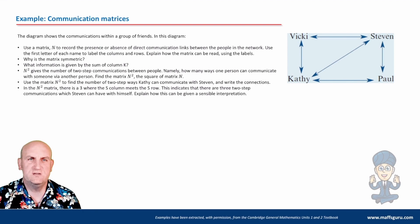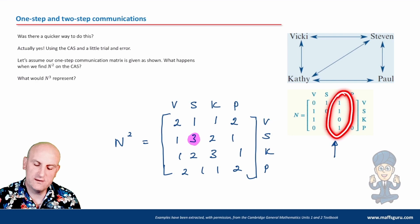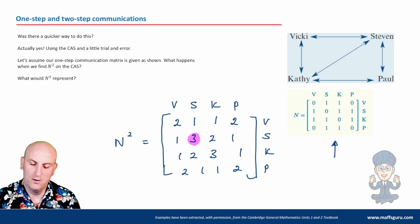What information is given by the sum of column K? Oh, okay. Well, let's go back. So here is my column K. If I was to add all of those together, I would get three. What would the significance be of that three? Well, remember that one, one, one, each of those ones mean there's a different person talking to Kathy. And so in that situation, the relevance of that would say that there are three people who can communicate to Kathy. Oh, we like that.